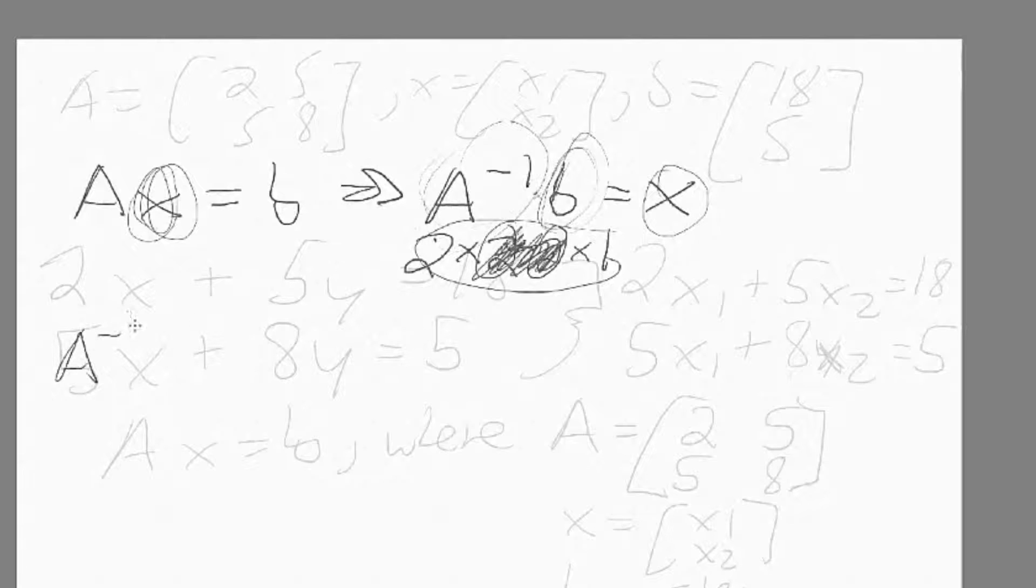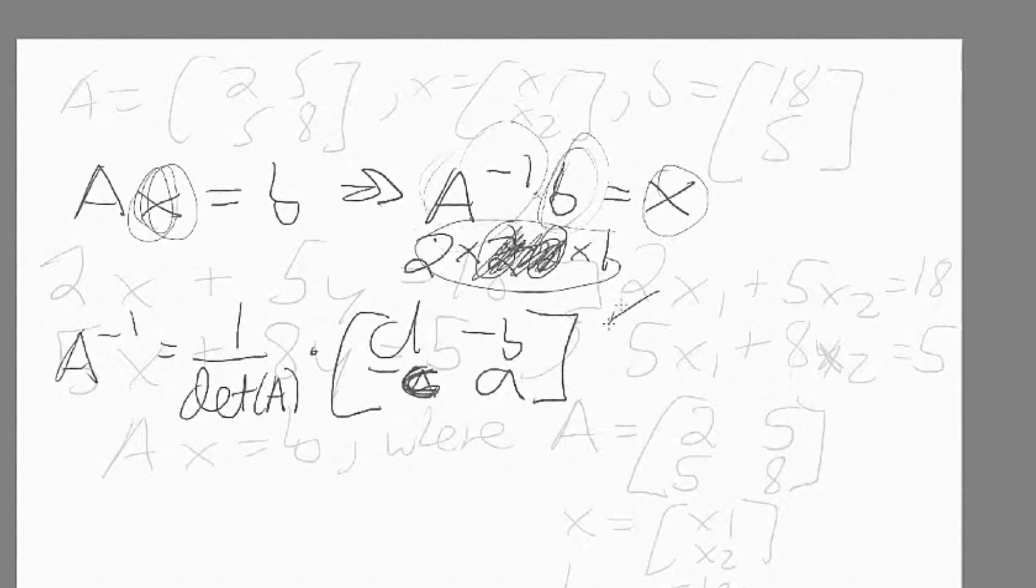So we need to invert A. To invert the matrix, you divide by the determinant of it. You need a formula over here. You'll need to put D, negative B, negative C, and A. This is for a matrix that's A, B, C, D.